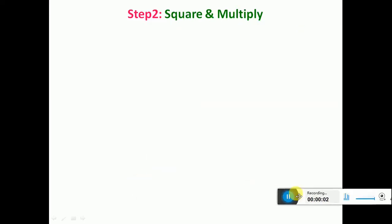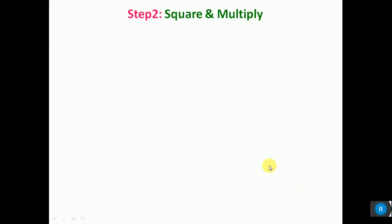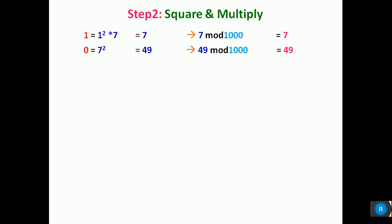Now let's go to the second step: square and multiply. As understood before, when you encounter a 0, we just have to square under modulo n, and when you have a 1, you have to square and multiply under modulo n. Now let us pick the first bit, which is 1. Since it is 1, we have to square and multiply: square of 1 into the base term 7, under mod 1000. The remainder is 7. The next bit is 0, so since it is 0, we just square it under modulo n — 49 under modulo 1000. The remainder is 49.